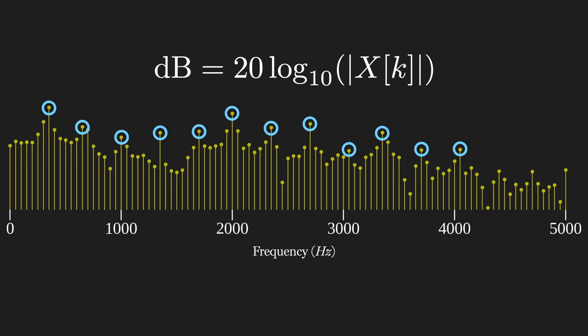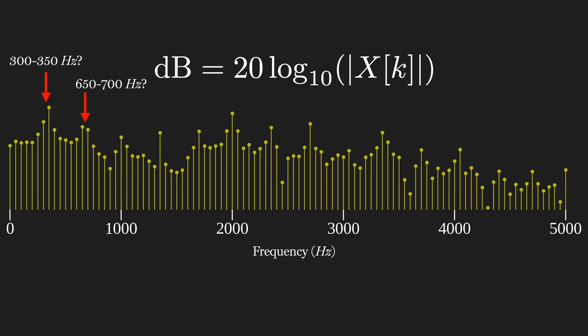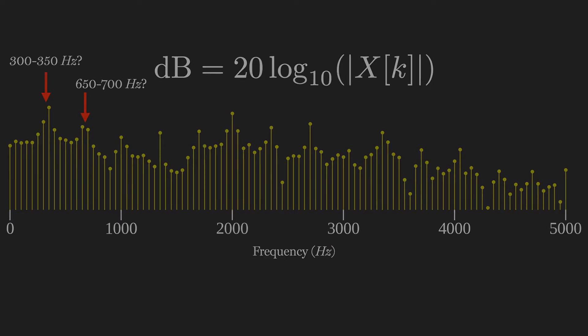But notice that the frequencies and harmonics present in the signal don't always line up with our Fourier series, like between 300 and 350 hertz. Maybe the true frequency in the segment is something in between, like 335 hertz. Can we determine that precise frequency and that of others that aren't exactly lined up with our Fourier series? So this is almost what we want. And as the song goes, you can't always get what you want, but if you try sometimes, you might find you get what you need.